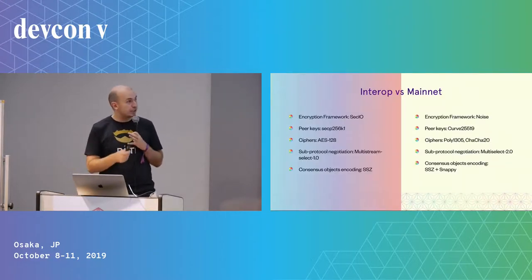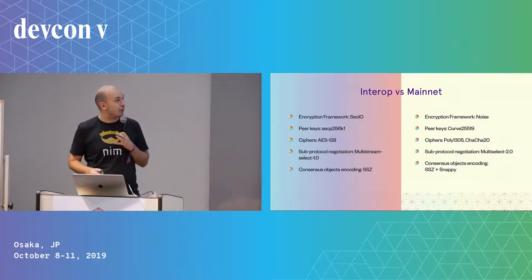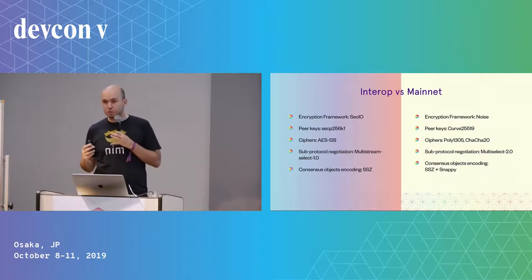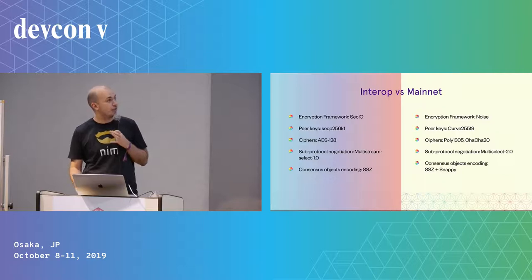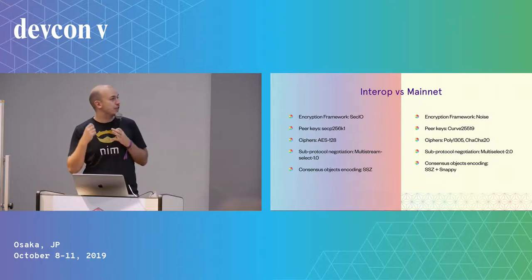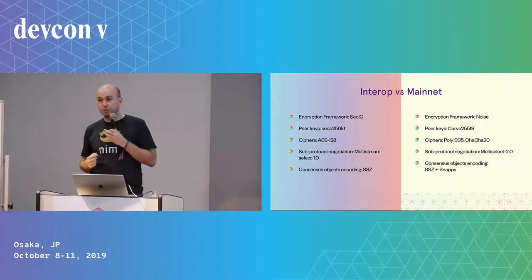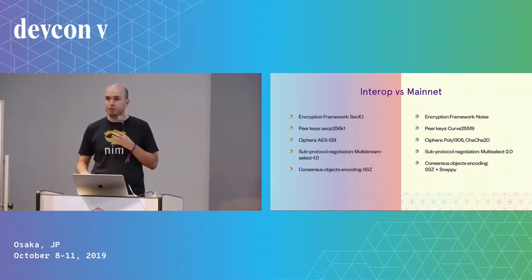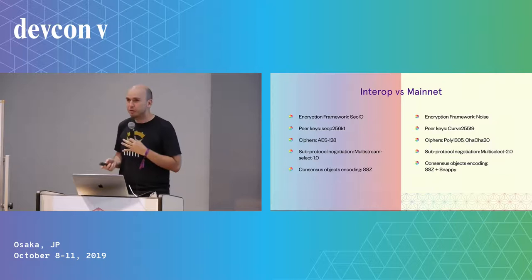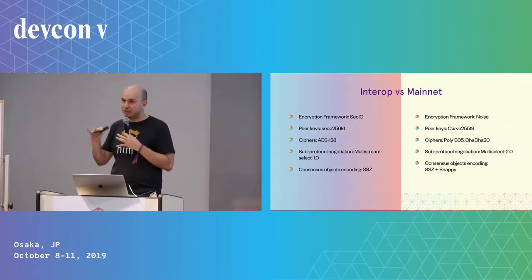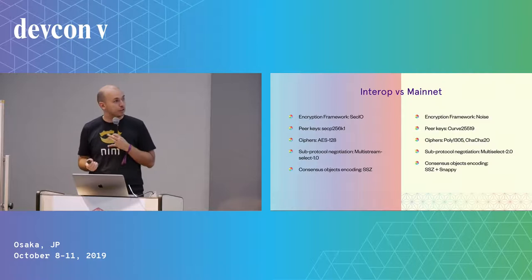To give you an example, here is a comparison between the minimal interop spec and what we expect to do for mainnet in just a few months. We will be changing the encryption framework, the keys used to identify nodes, switching the subprotocol negotiation scheme in libp2p, introducing compression, and more. You can say that at nearly every single layer, there will be new developments.